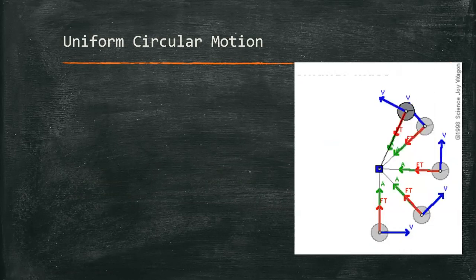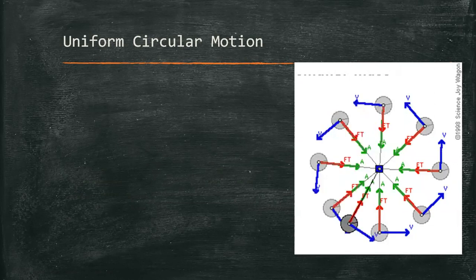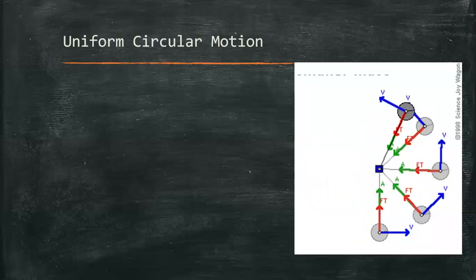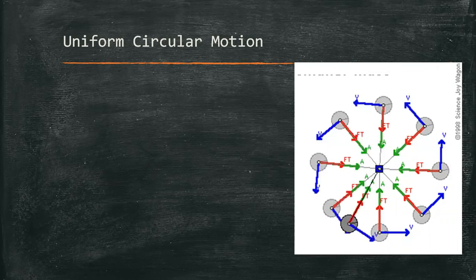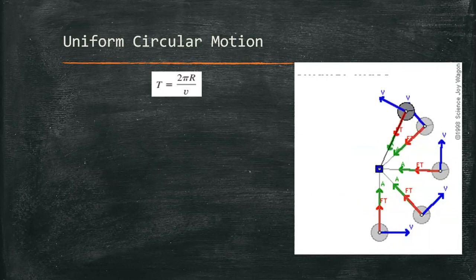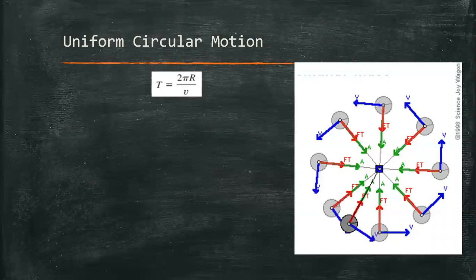We have plenty of examples of bodies moving in uniform circular motion. One of these is the illustration or figure on the right side. We can describe uniform circular motion with the time it takes for a body to revolve around the circle — that's what we call period. We can solve for period using the formula 2πr over the speed or magnitude of the velocity, where 2πr is derived from computing the circumference of the circle.